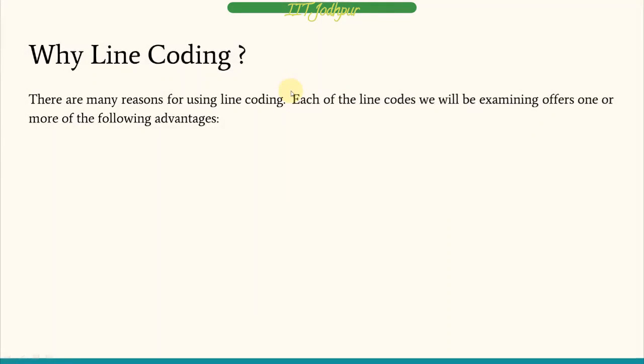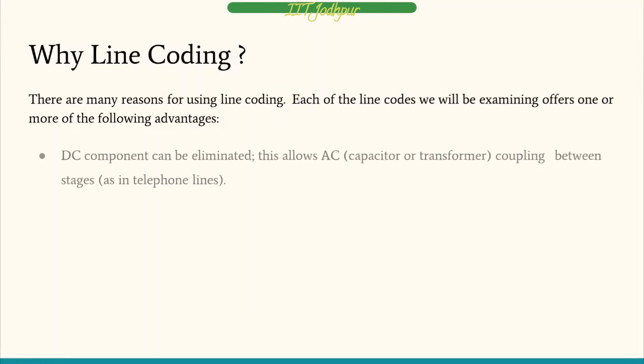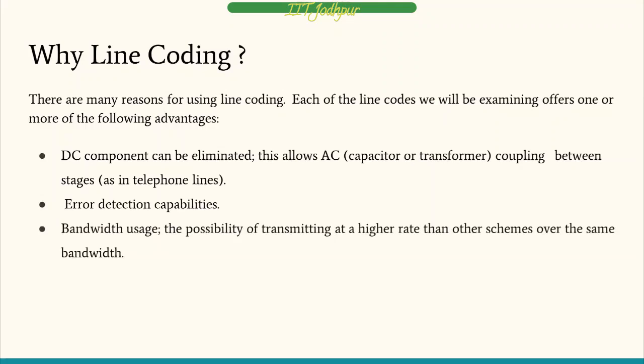Why line coding? Each of the different line codes offers one or more advantages: we can completely eliminate the DC component, which constitutes no signal and is just wastage of power. Line coding also has error detection capabilities for errors that might happen during transmission, and better bandwidth usage — at the same bandwidth, different line codes may transmit a higher data rate.